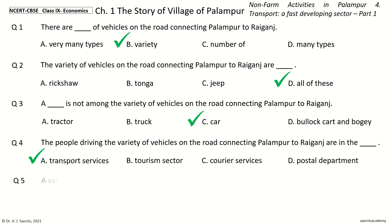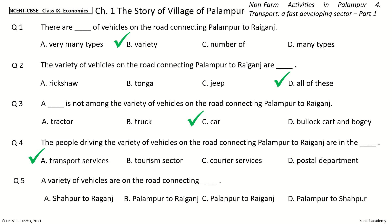Question 5: A variety of vehicles are on the road connecting dash. The options are: Shahapur to Raiganj, Palampur to Raiganj, Palanpur to Raiganj, Palampur to Raiganj. And the answer is Palampur to Raiganj. So, a variety of vehicles are on the road connecting Palampur to Raiganj.